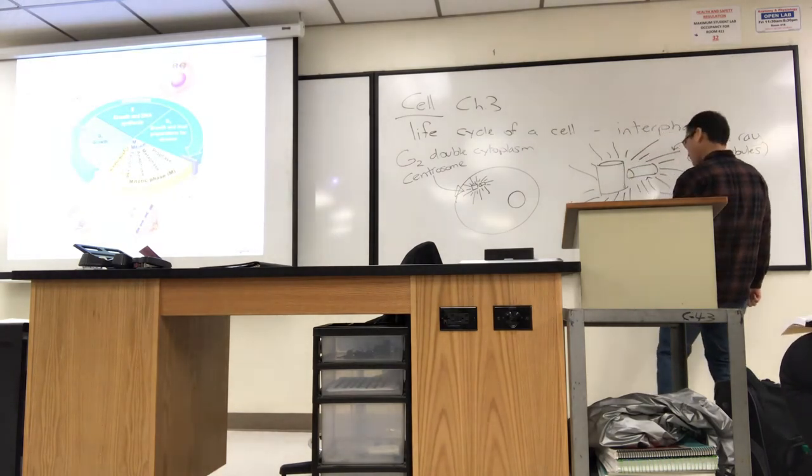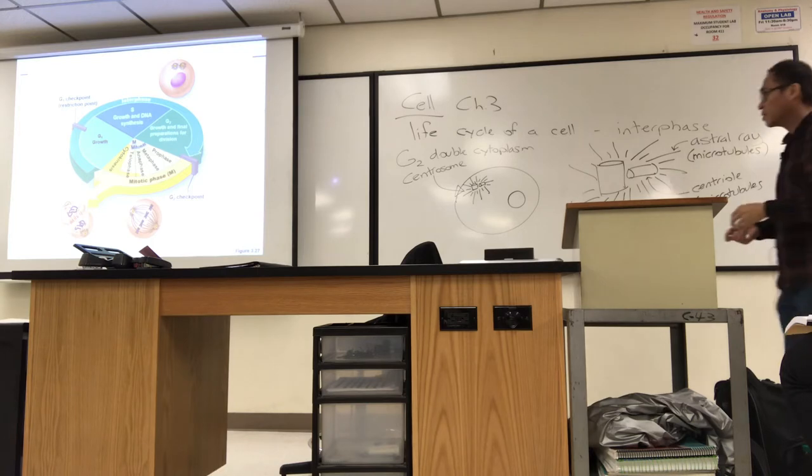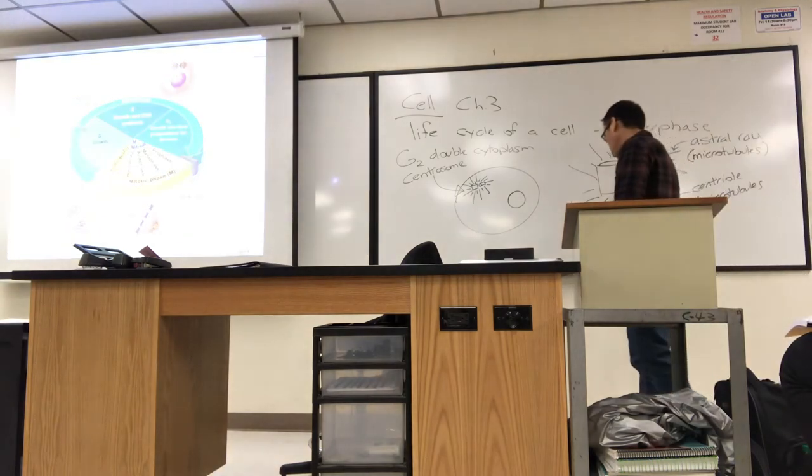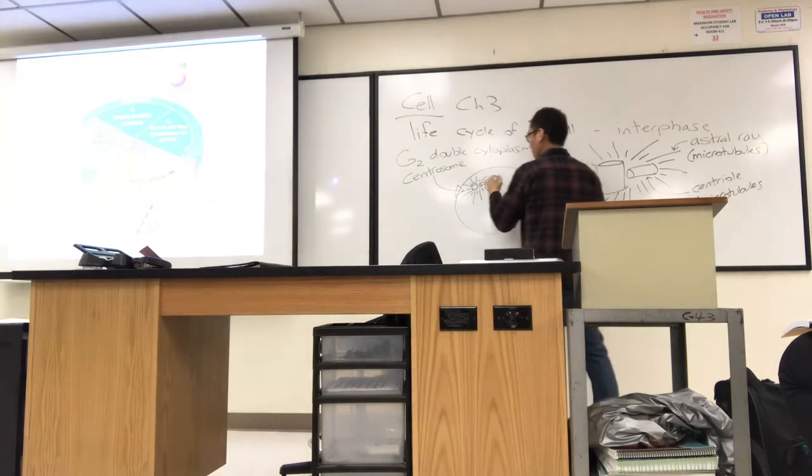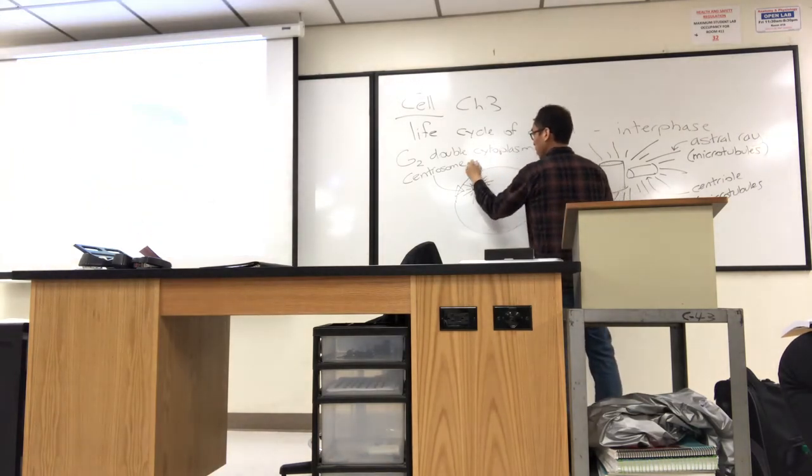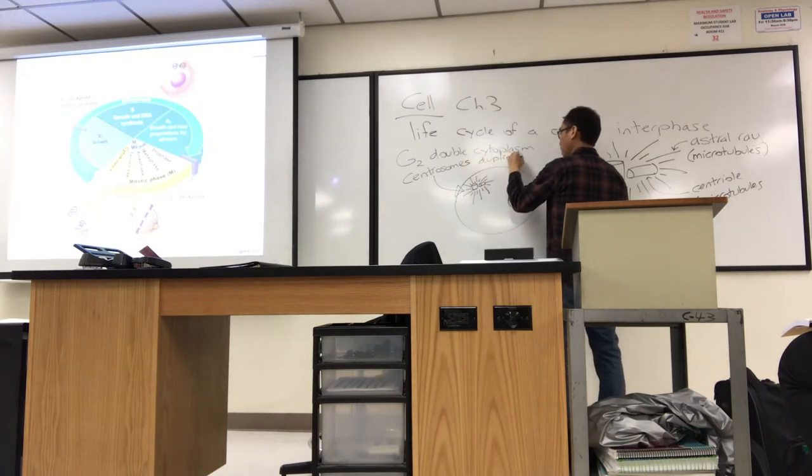Astral ray. What it really is are microtubules, microtubule fibers that the cell produces. Turns out, microtubules are the astral rays. Centrioles are composed of microtubules as well. But the centrioles, the two with the astral rays coming out, the whole thing is called centrosome. And in G2, the centrosomes duplicate. Double cytoplasm and duplicate centrosomes.